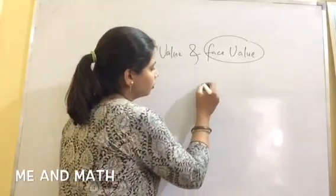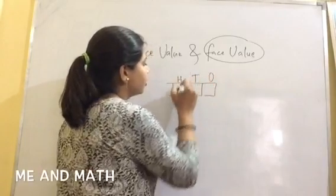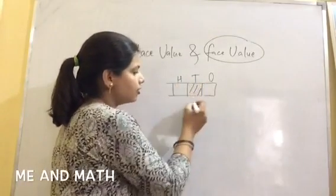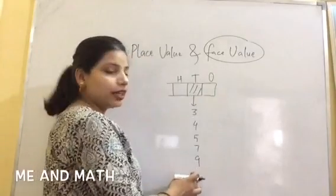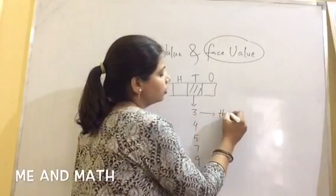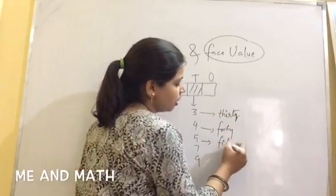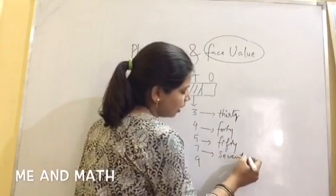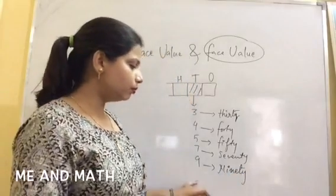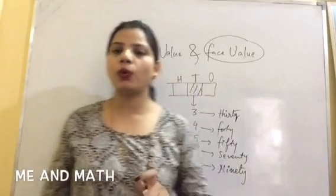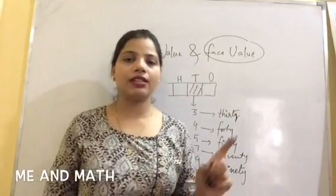This is ones, tens, hundred. One more thing about tens is that any number over here, as it is written three, four, five, seven, nine, whatever, we won't call it like this. We'll call it like three tens as 30, four as 40, five as 50, seventy and ninety. We will call it like this. The tens number will always be named as its tens digit, like three tens means 30, four tens 40, five tens 50, and so on.